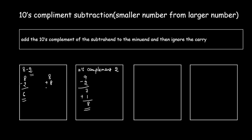Now add the tens complement to the minuend: 8 plus 8 equals 16. Both operands are one digit each, so the result is a two-digit number — the leading 1 is the carry. Ignore the carry; the final result is 6, which matches the regular subtraction value of 8 minus 2.